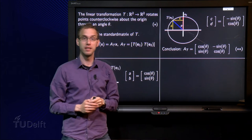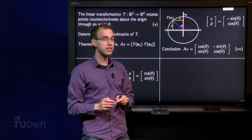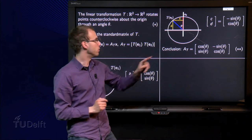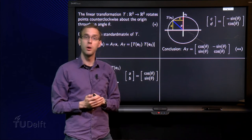And here we have T(e₂). And let's call the components C and D, so T(e₂) equals [C, D]. What about that?